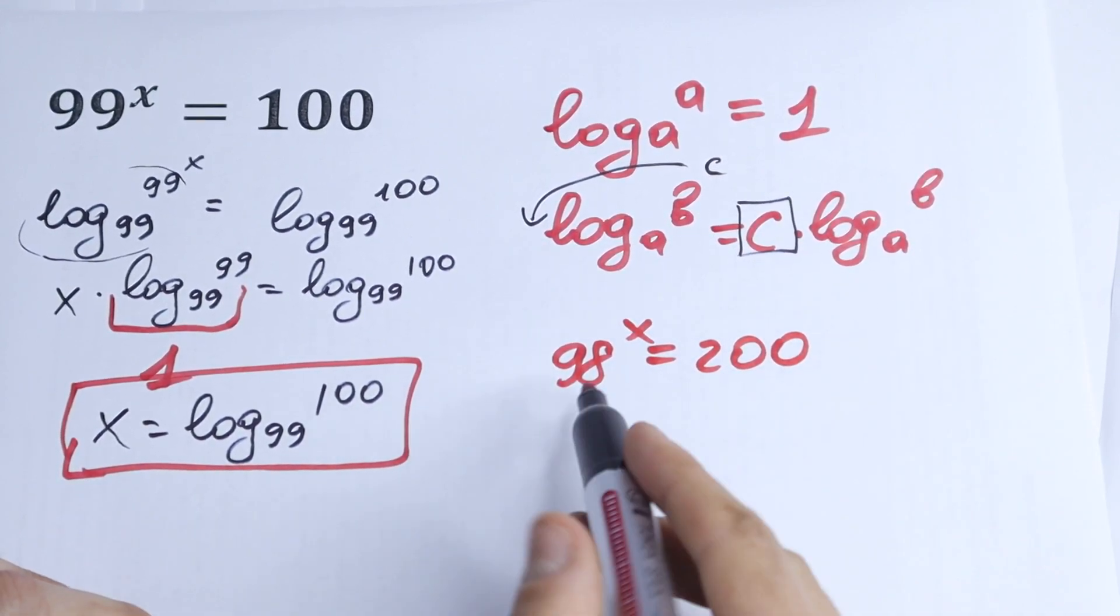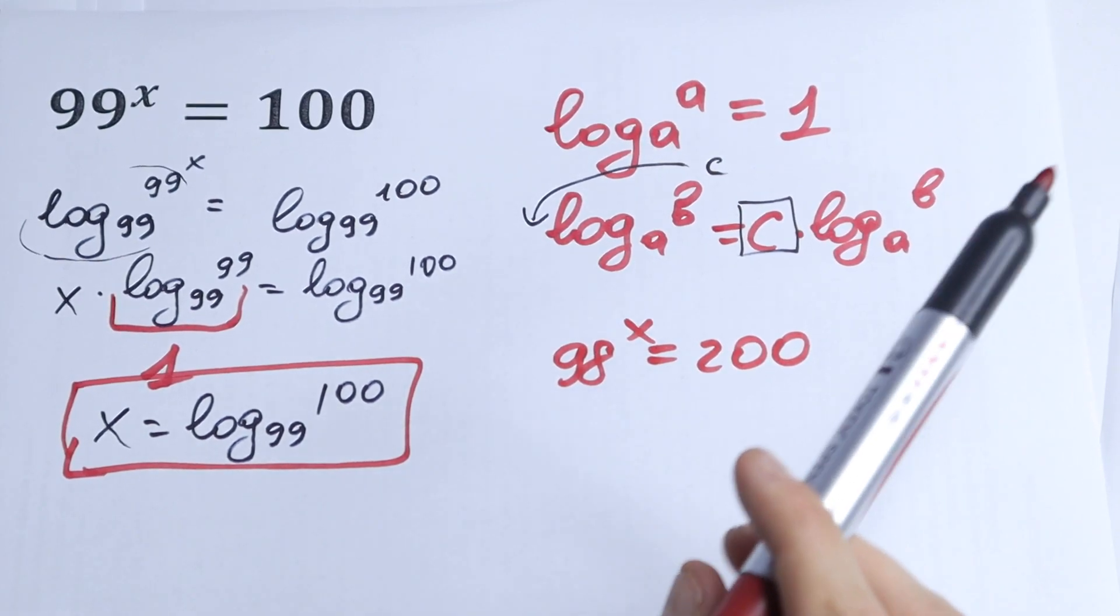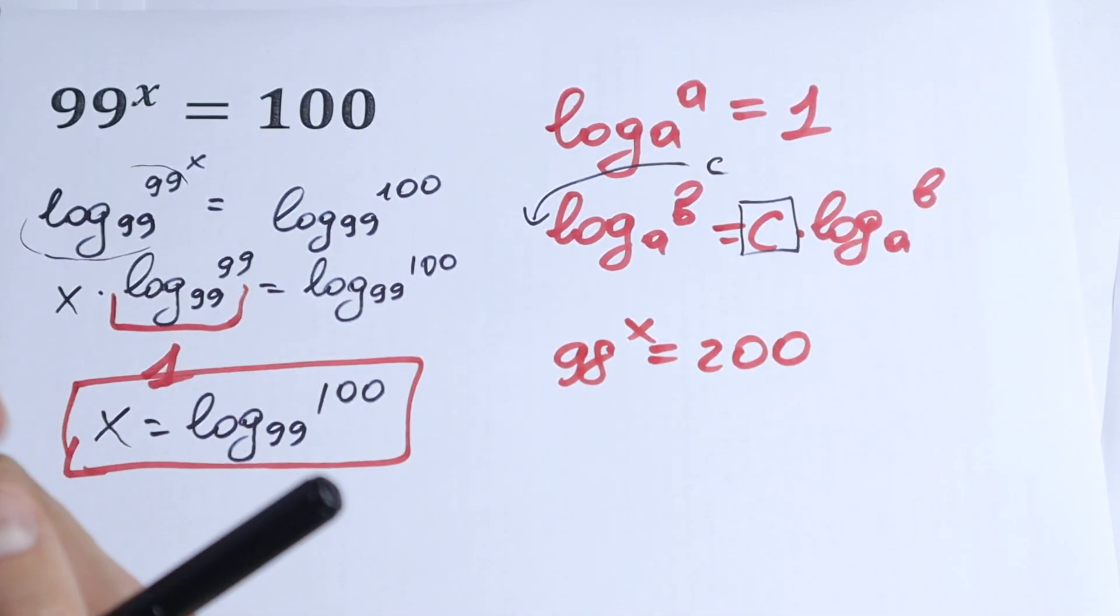For example, 98 to the power x equals 200. Write your answer in the comments. And thank you for watching and see you in the next videos. Subscribe for more.